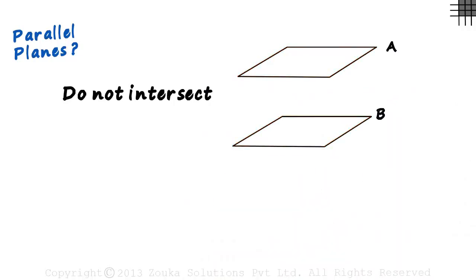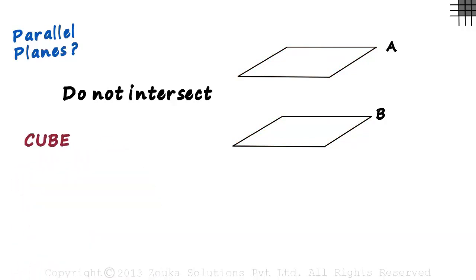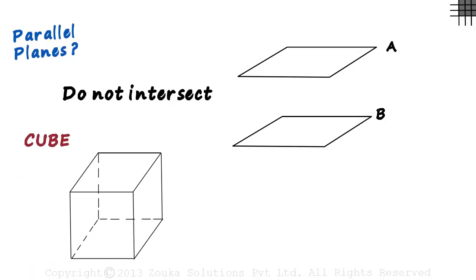And the best example of parallel planes is opposite surfaces of a cube. Let this be our cube. Let us name all the vertices of the cube so that we can identify the planes easily.